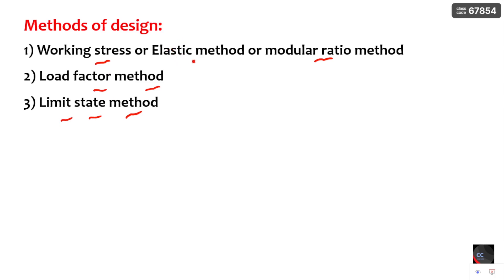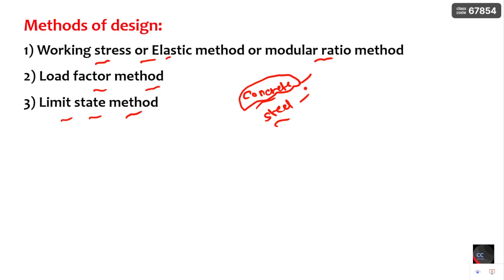The working stress method is based on the assumption that concrete and steel are both elastic materials. You all know that concrete is not at all an elastic material — it acts like an inelastic material — but in the working stress method they assumed both concrete and steel are elastic and act as a single material. The section is assumed to fail when the structure reaches the elastic limit only.